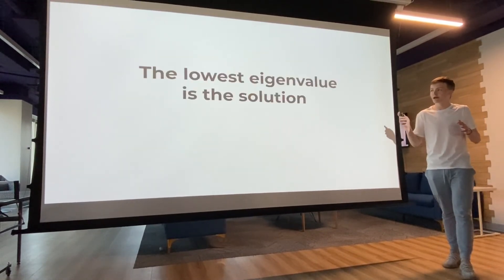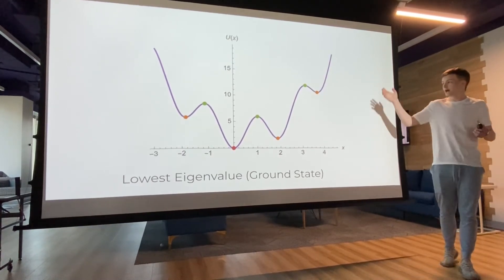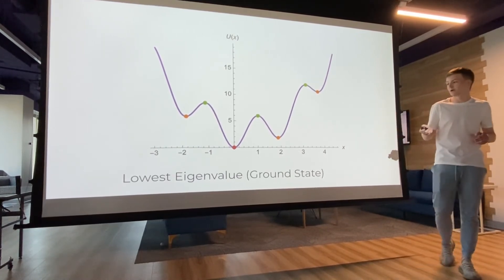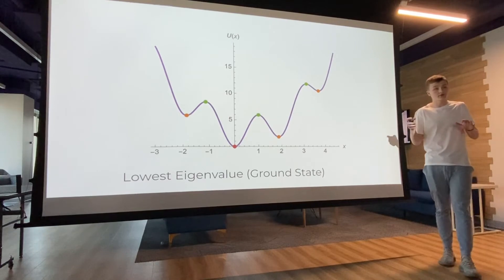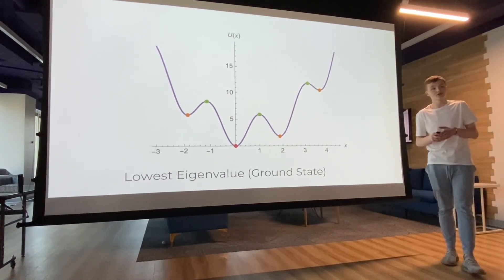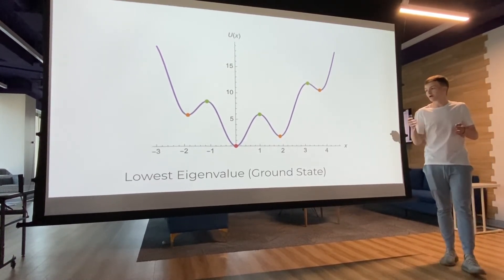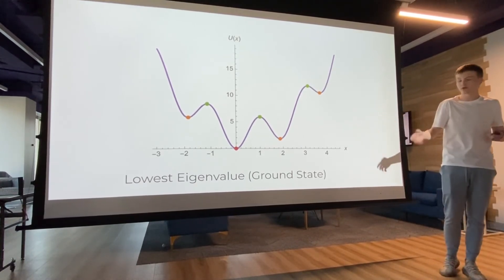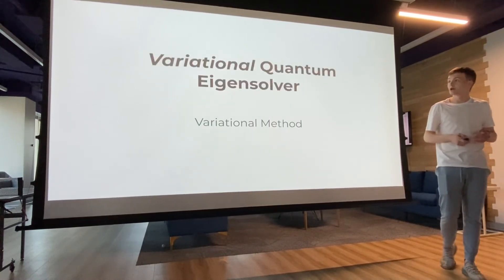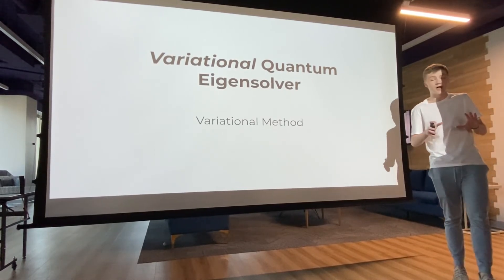Another intuitive way to look at things is at the energy graph of the Hamiltonian. We have the progression of the Hamiltonian over time, and we have a global minimum at x equals 0. The lowest eigenvalue of this system is at x equals 0, and that's the solution to our system. We also call this solution the ground state, because all physical systems want to move to their lowest energy point. What we're trying to do is find the lowest eigenvalue — the ground state.